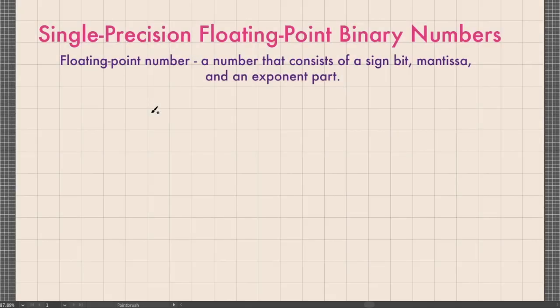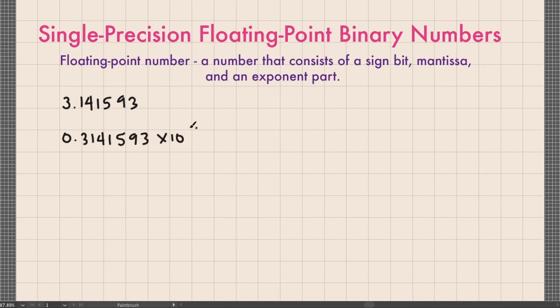A floating point number is a number that has an integer part and a fractional part. To represent extremely large or extremely small numbers, the decimal point is moved to the left of all non-zero digits so that the mantissa becomes entirely fractional and the exponent is a power of 10. For example, in the decimal number system, 3.141593 can be rewritten as 0.3141593 times 10 raised to 1, giving us a mantissa part and an exponent part.